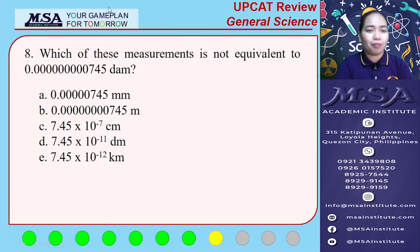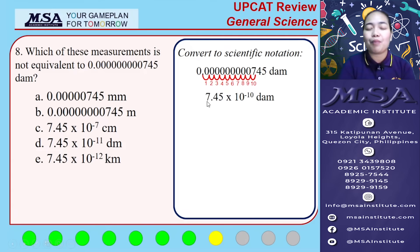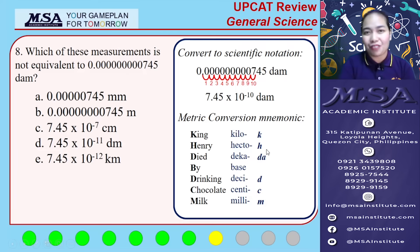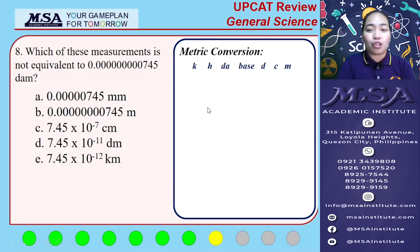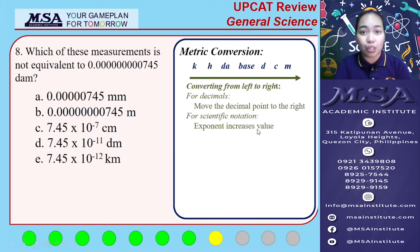Number eight: which of these measurements is not equivalent to 745 one-trillionth decameter? First, let's convert our given to scientific notation by moving the decimal point after 7 — that gives us 7.45 times 10 to the negative 10 decameter. For metric conversion, we can use the mnemonic: King Henry died by drinking chocolate milk, where the first letter corresponds to the prefixes. When converting from left to right for scientific notation, we increase the exponent value.